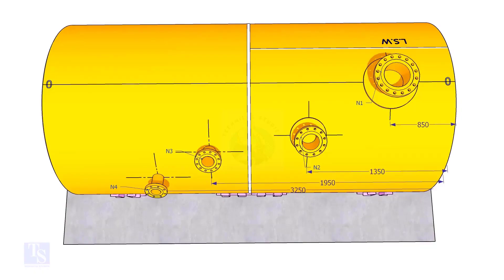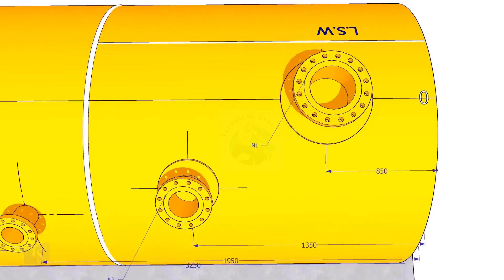Extend the nozzle N1 center line up to the other end of the shell and mark it as zero degree.